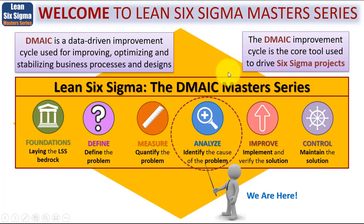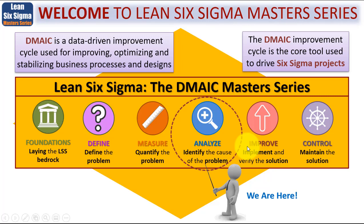As you know, DMAIC is a data-driven improvement cycle used for improving, optimizing and stabilizing business processes and designs. We're here in the Analyze Phase, and the DMAIC improvement cycle is the core tool used to drive Lean and Lean Six Sigma projects. In the previous series we looked at the Measure Phase where we spent a lot of time quantifying the problem.